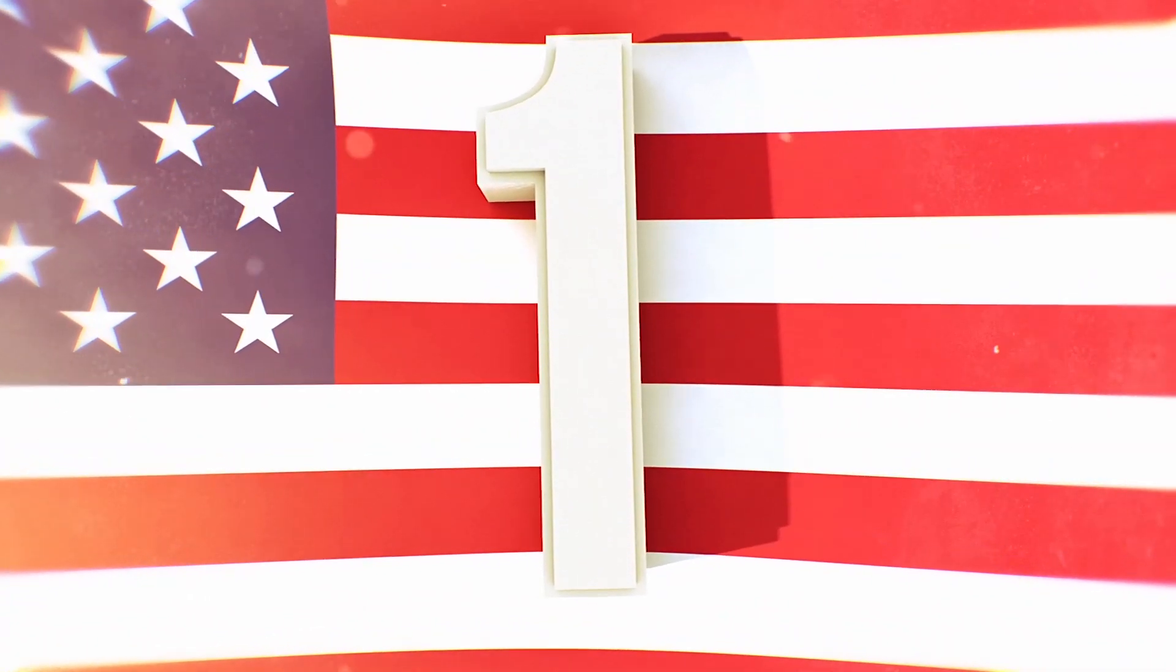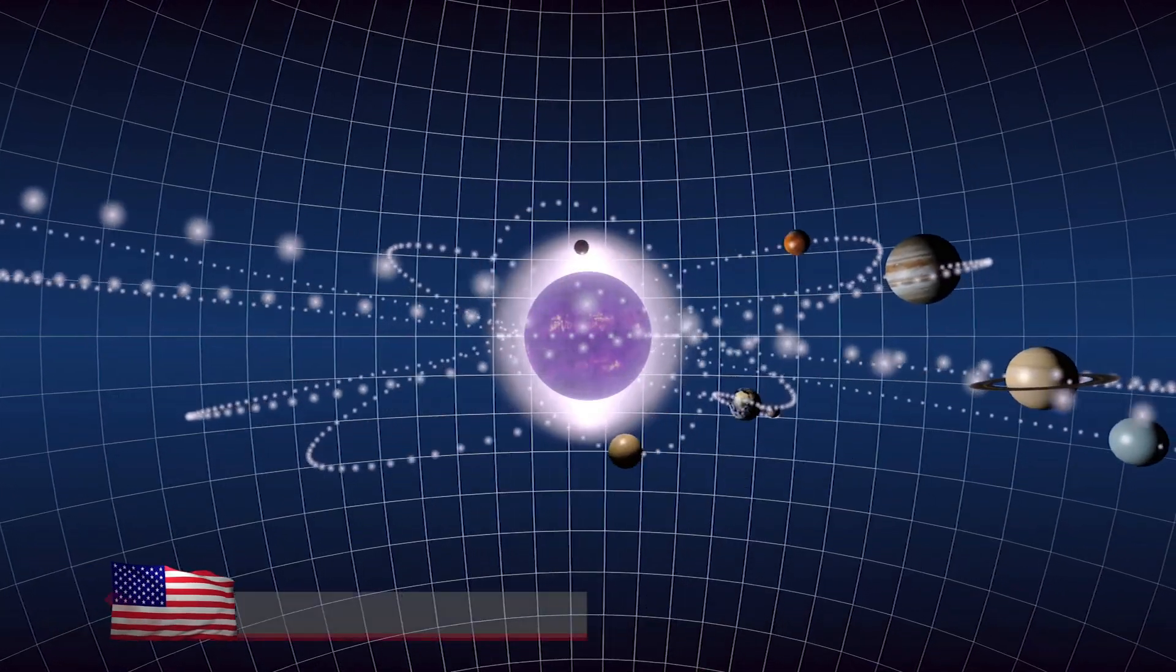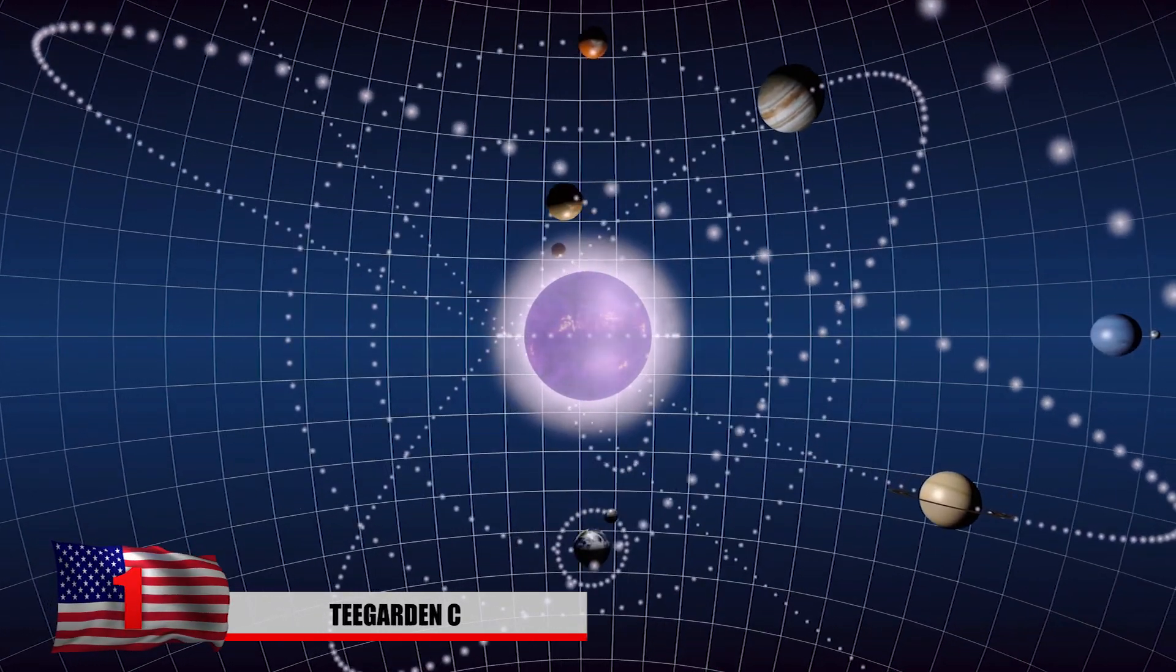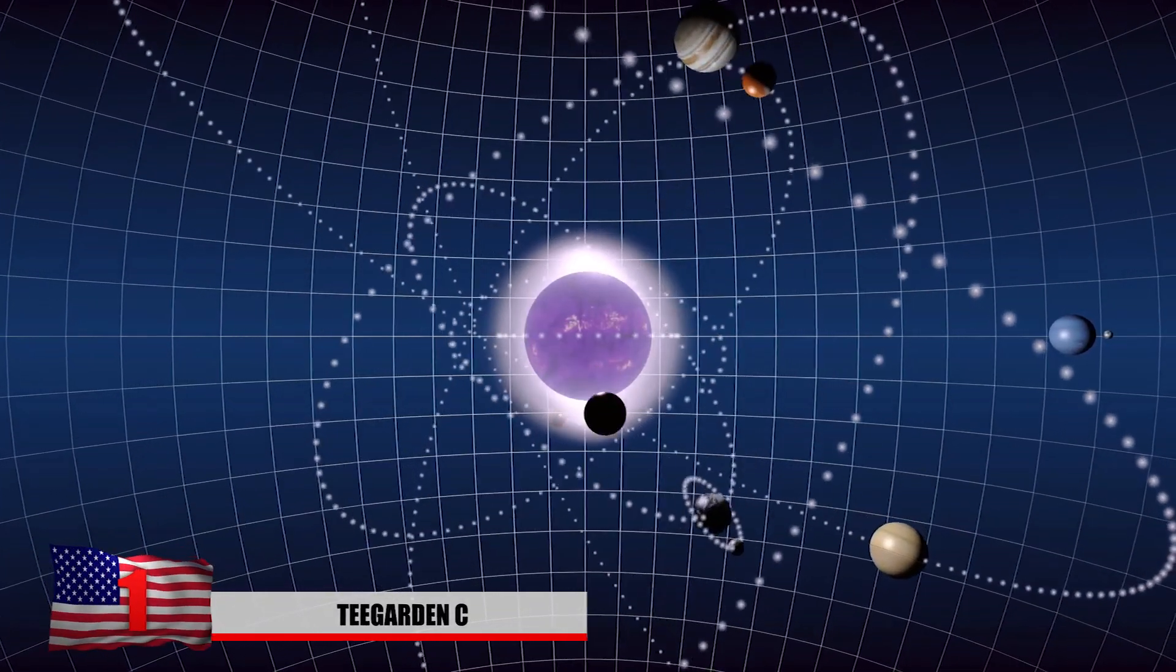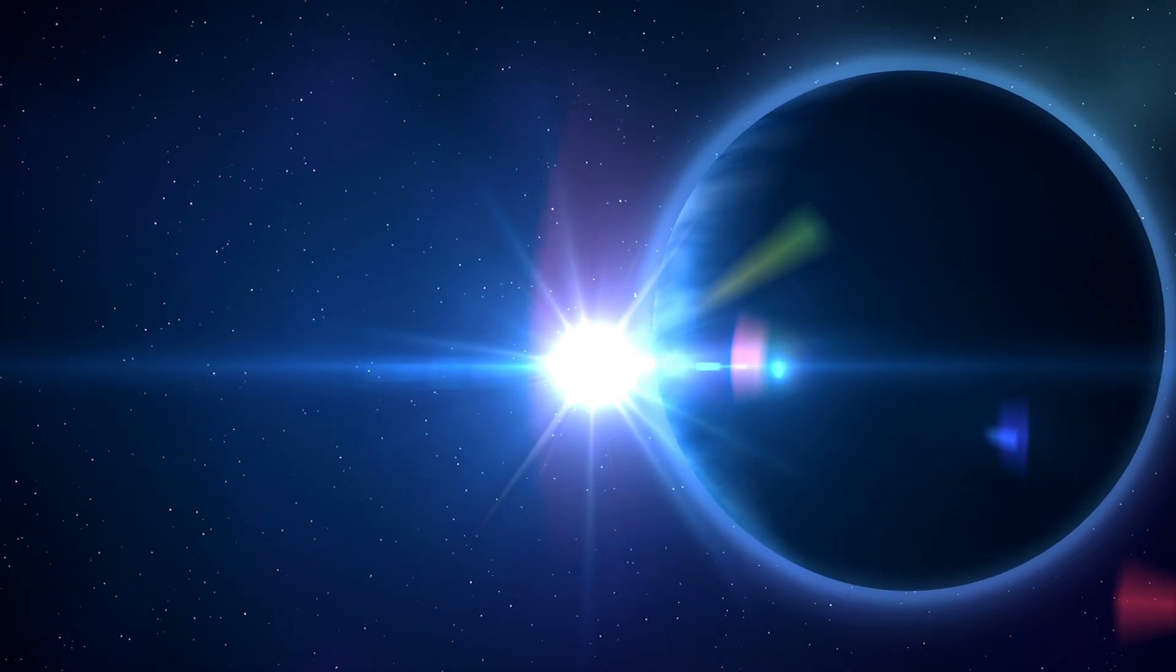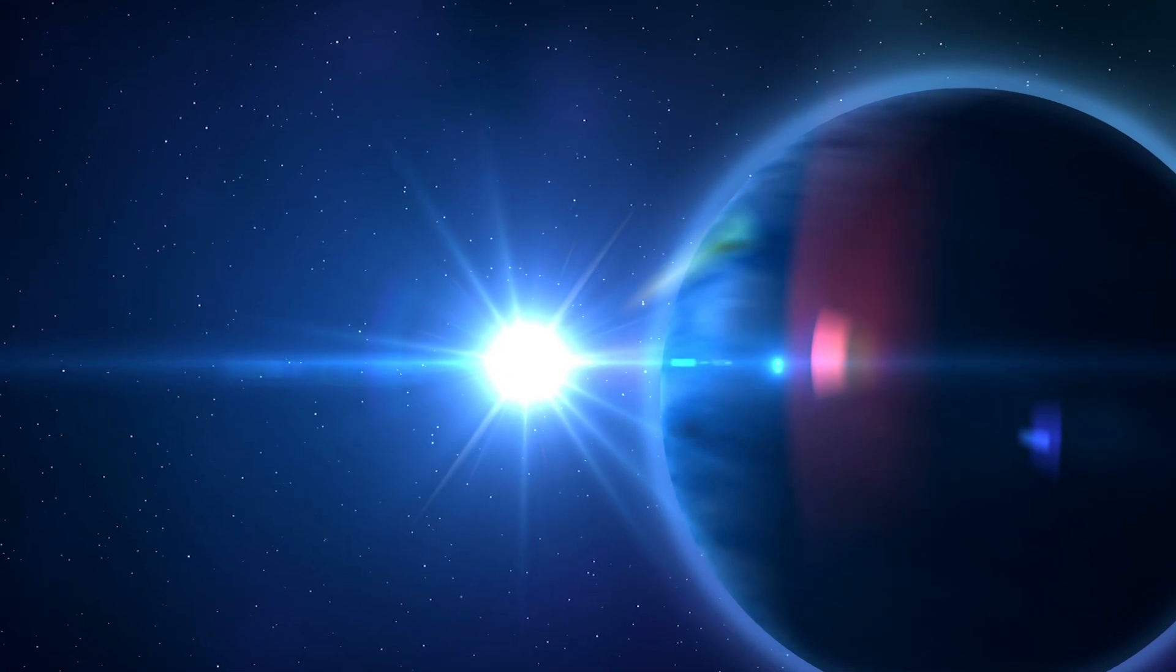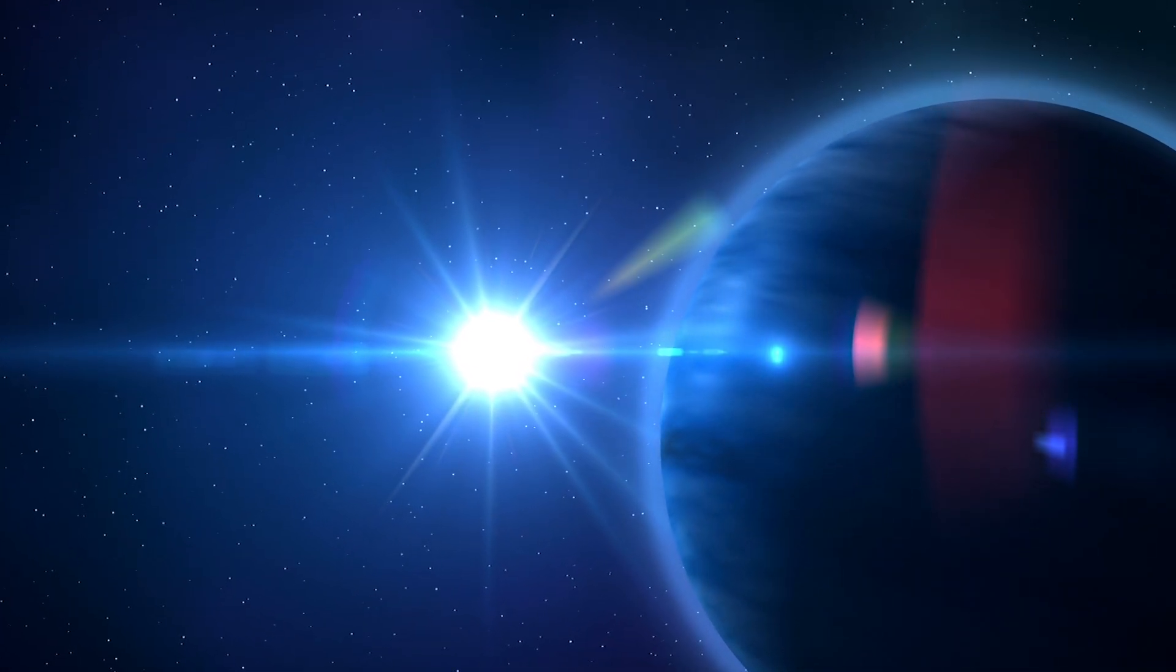And number 1, Teagarden-C. As of July 2019, this is the fourth closest exoplanet from planet Earth, located about 12 light years away. It was discovered just recently in June of this year and is the outermost planet of its solar system. It's very similar to Earth based on its size and mass, which has led many to believe that it also has Earth-like characteristics.